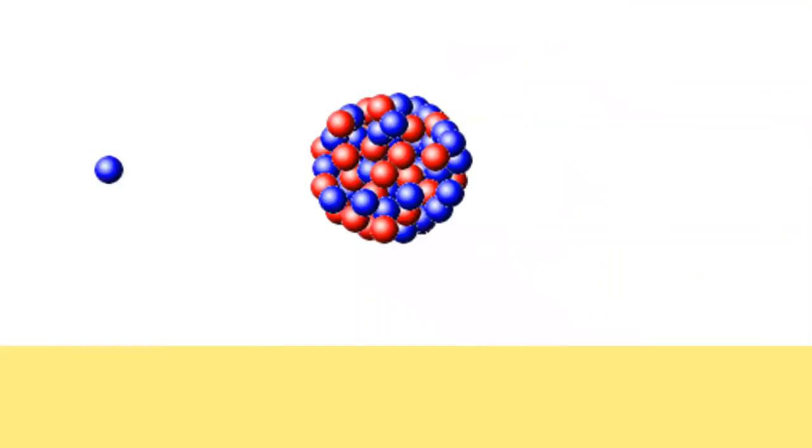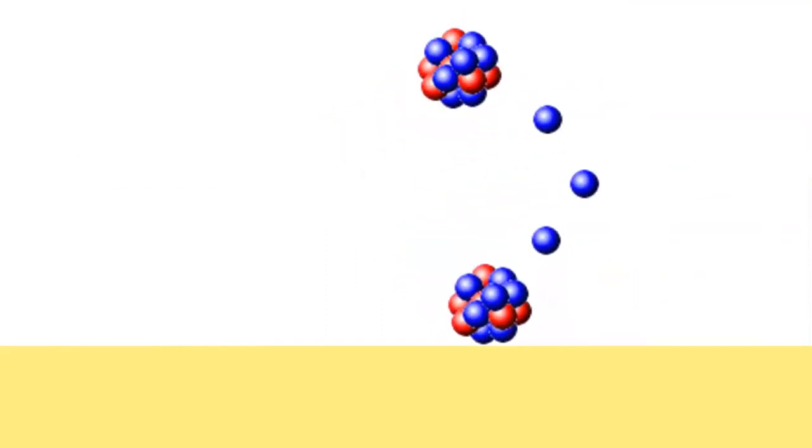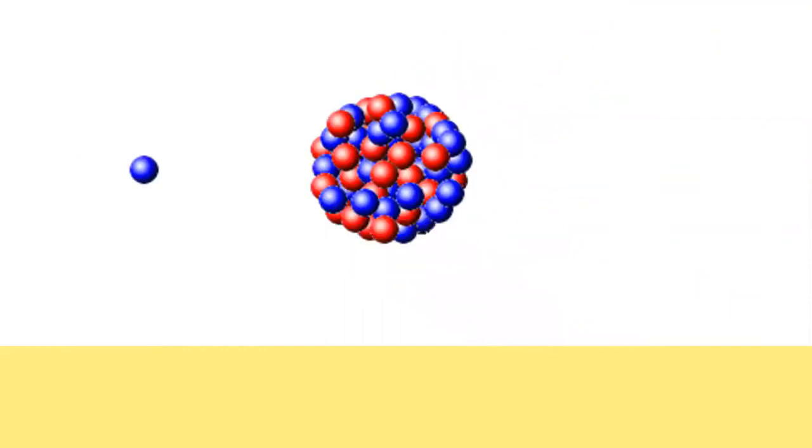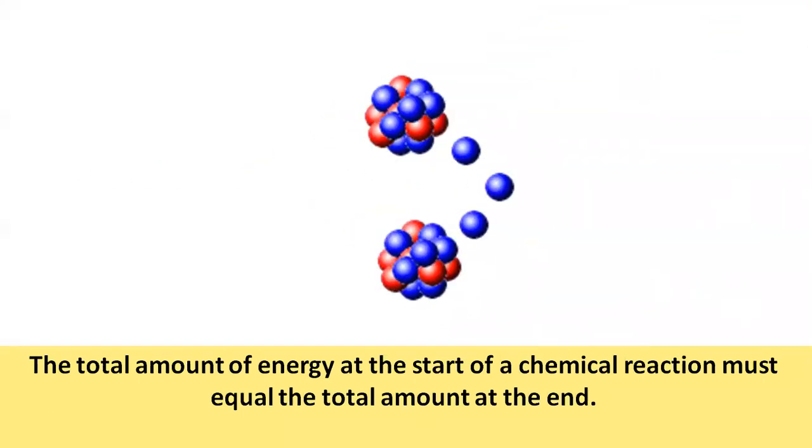In a chemical system, energy is contained within chemical bonds. Energy is released when bonds are formed between molecules in a chemical reaction. When molecules are broken down, the energy is released. As with physical systems, however, the total amount of energy at the start of a chemical reaction must equal the total amount at the end.